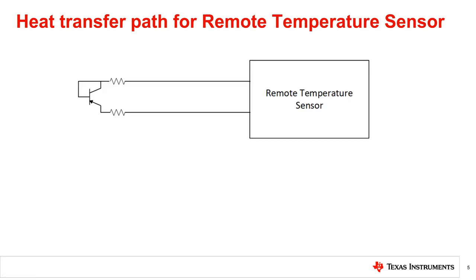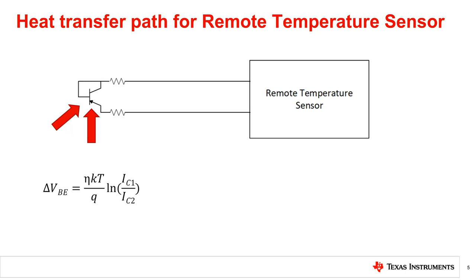Remote temperature sensors determine temperature by measuring the temperature of a remote junction diode. The temperature sensor works by driving different currents and measuring the base-emitter voltage. Knowing the VBE and current ratios, the temperature of the remote junction can be easily calculated using the Ebers-Moll model.